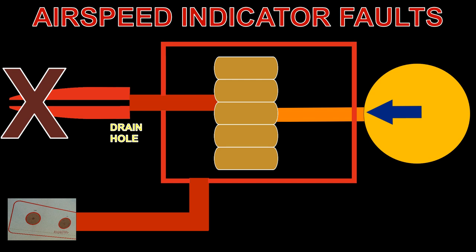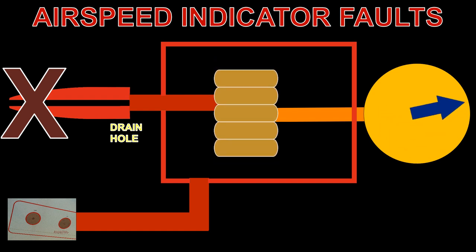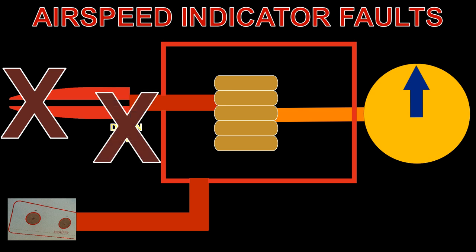If the pitot opening is blocked but the drain hole is open, the system pressure will drop to ambient pressure, and the ASI pointer will drop to a zero reading. If both the opening and drain holes are blocked, the ASI will not indicate any change in airspeed.